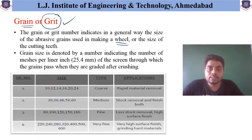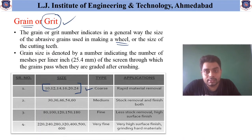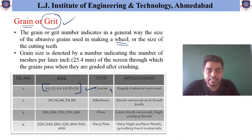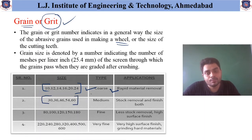If the size of the grain is from 10 to 24, those particles are called coarse grain, and their specific application is rapid material removal — as the size of particle is very large, it is helpful to remove more material from the work piece. If the size is in the range of 30 to 60, those are called medium grain particles, used for both stock removal and finishing.